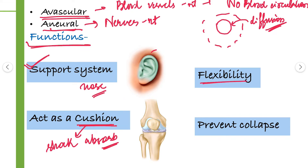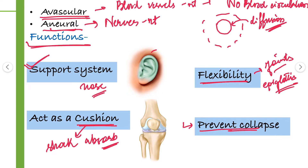Next function: cartilage provides flexibility to bones, joints, and other structures. For example, cartilage is present on the epiglottis, providing it flexibility. Next function: it prevents collapse — cartilage prevents collapse or damage in the trachea. Another function: cartilage is also present on the rib ends, which helps the ribs in outward and upward movement.